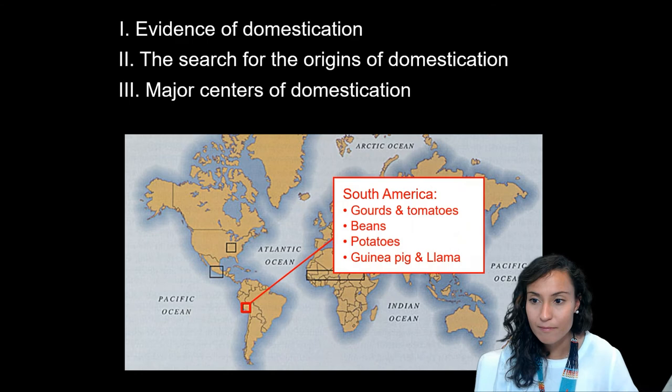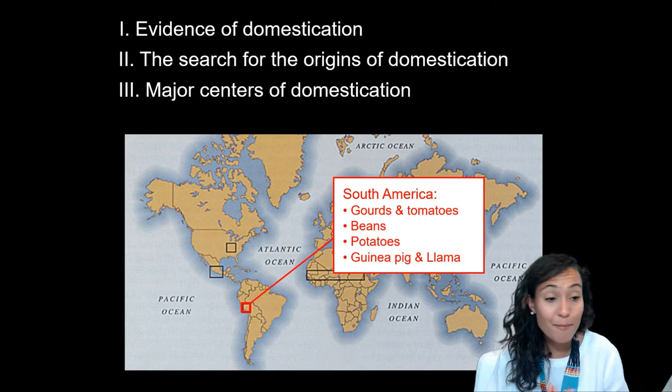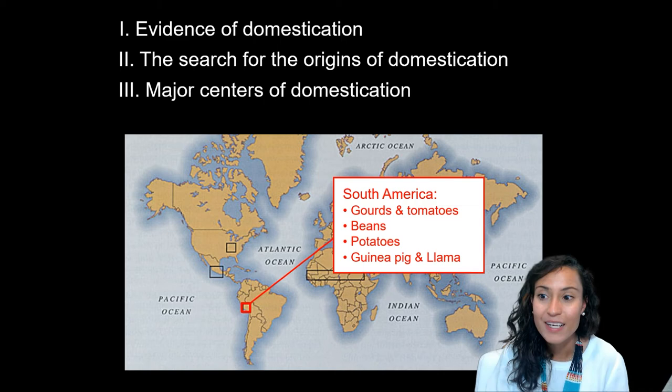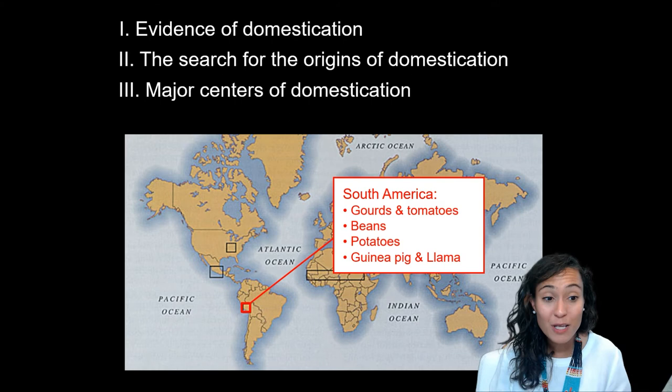Finally, we have evidence for domestication in South America, where beans, potatoes, gourds, and tomatoes were cultivated, along with guinea pigs and llamas. What's really amazing about this is that things like tomatoes, which we often associate with European foods like Italian cuisine, are products that originally grew only in South America and were introduced into European diets only after the 16th century.